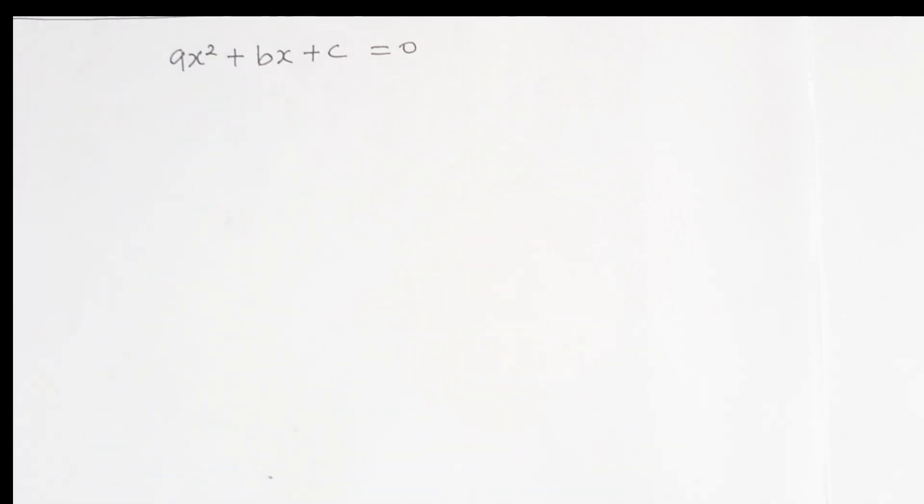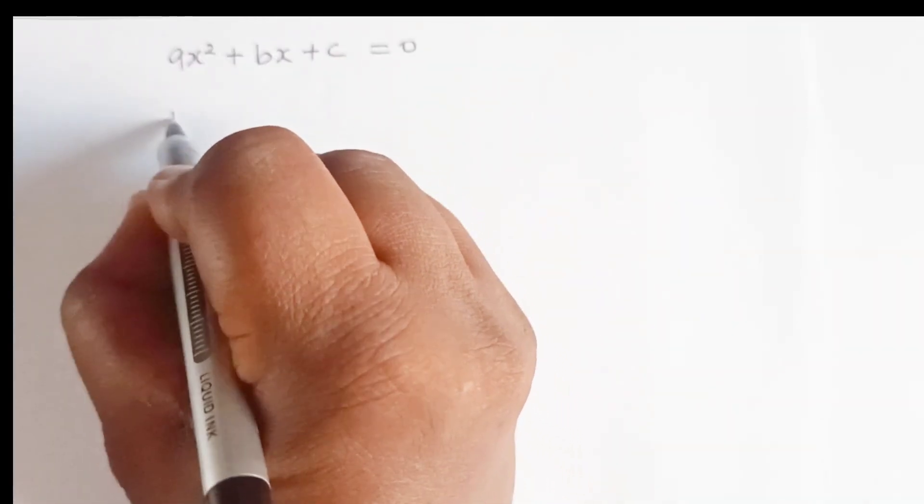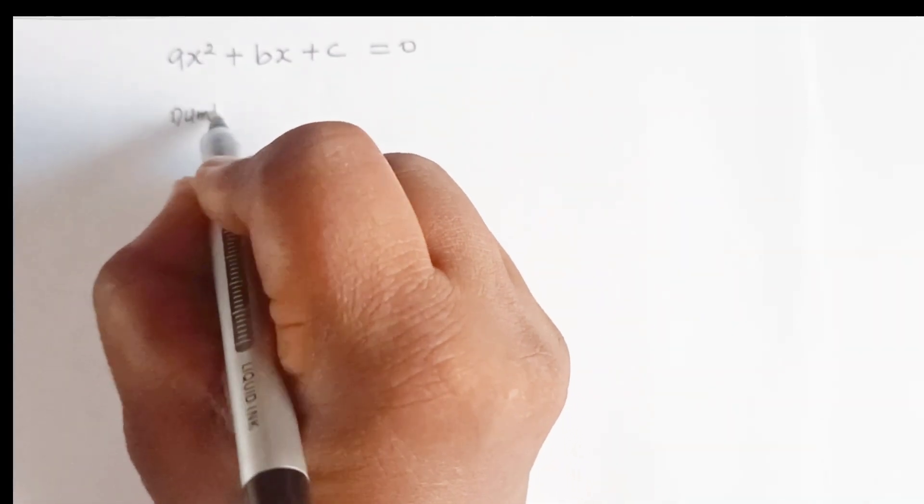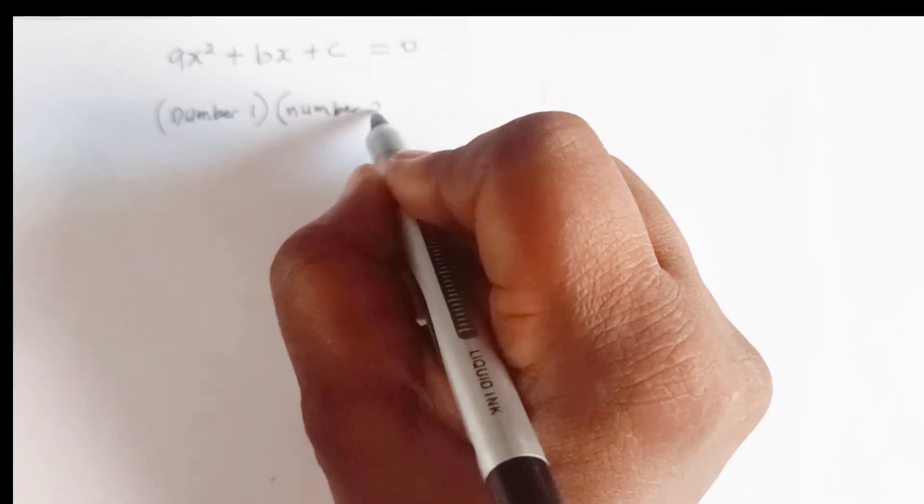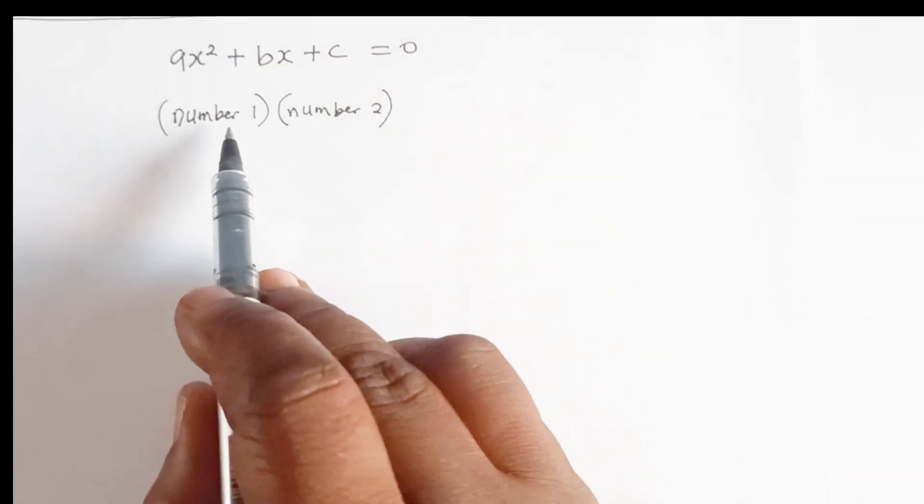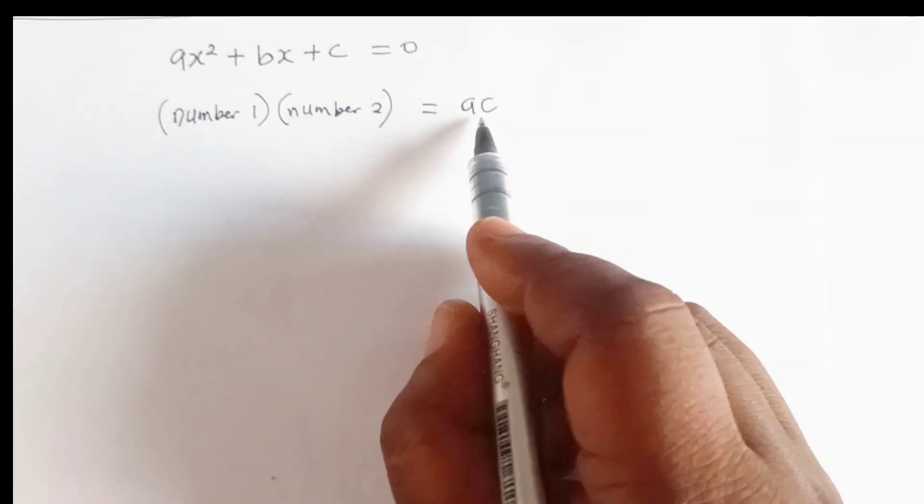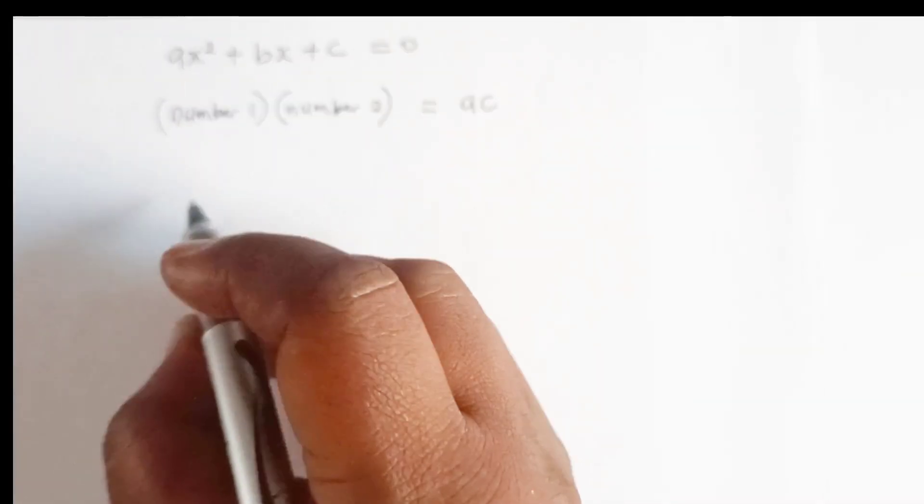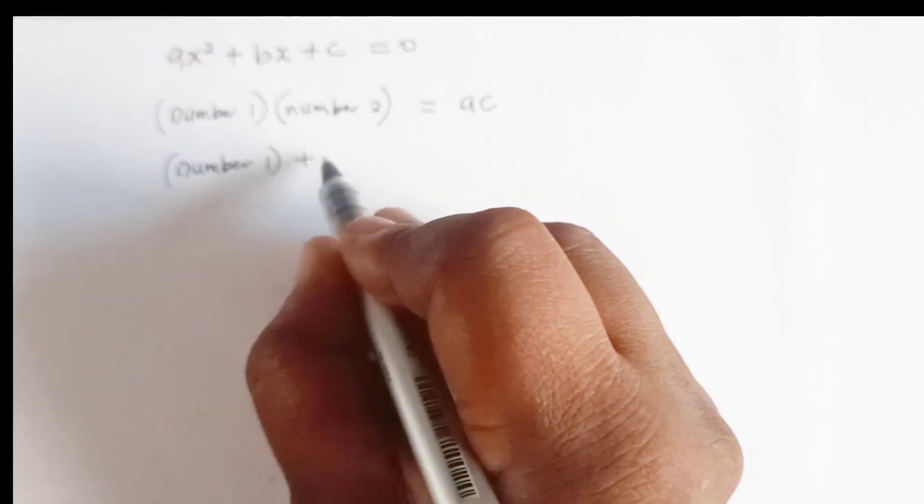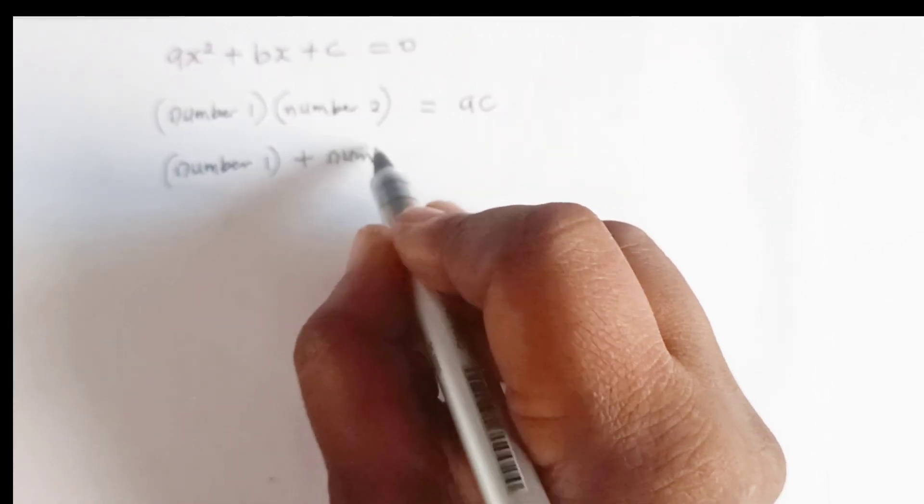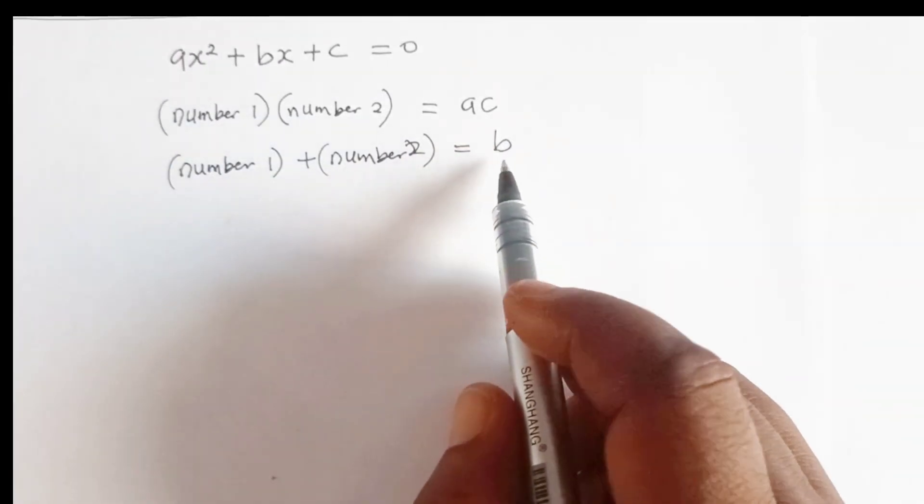So in order to factorize this quadratic equation, we need to find two numbers. The first number and the second number such that if we multiply them, their product will give us ac. And if we add them, number 1 plus number 2 is equal to the middle term, b.